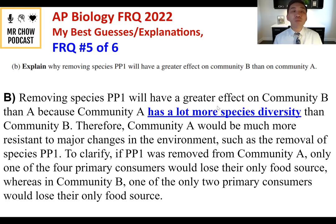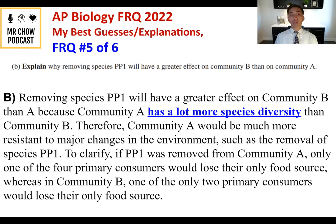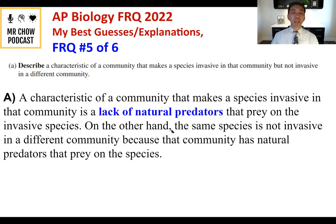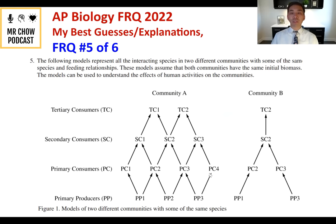Question 5B: Explain why removing species PP1 will have a greater effect on community B than A. Removing PP1 has a greater effect on community B because community A has much more species diversity than B. Community A would be more resistant to changes like removal of PP1. In community A, only one of four primary consumers would lose their food source, whereas in community B, one of only two primary consumers would lose their food source — a proportionally larger impact.